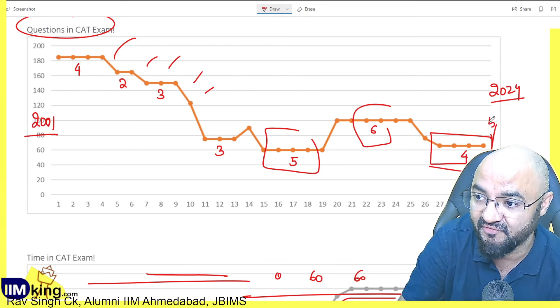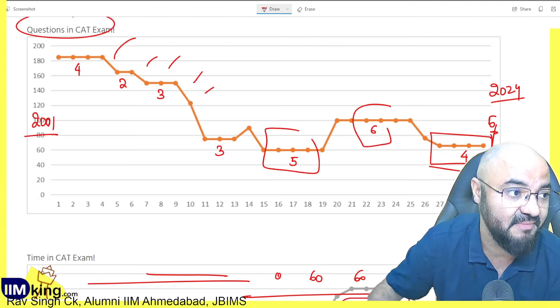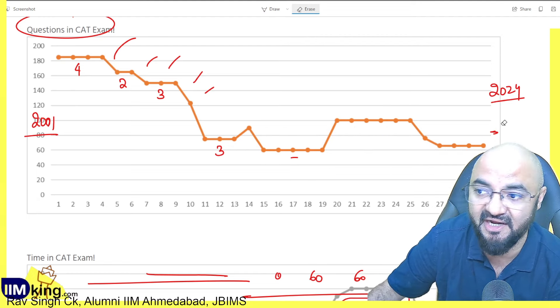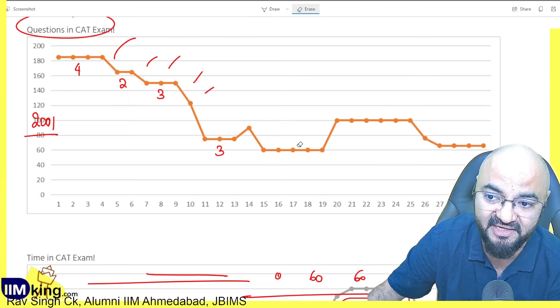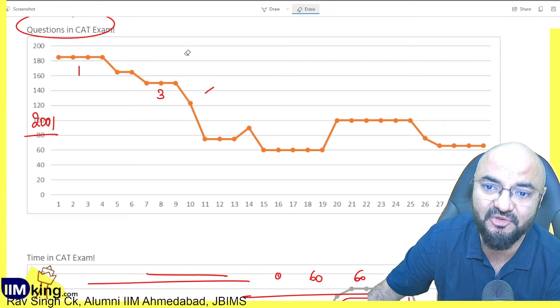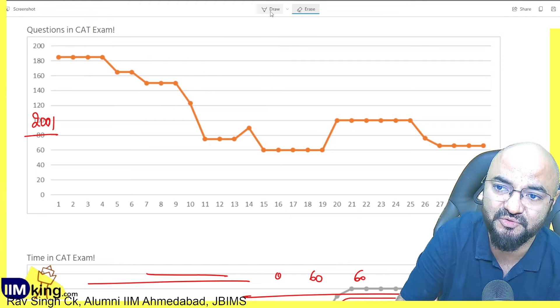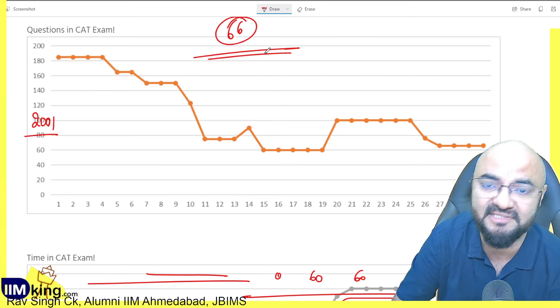So maybe this year, 5th year pattern might change, or maybe next year pattern might change. But historically, looking at the data, I doubt there's much expectation of changes. And by now it has been quite set. The pattern is totally set, the number of questions, 66 questions is very well set.